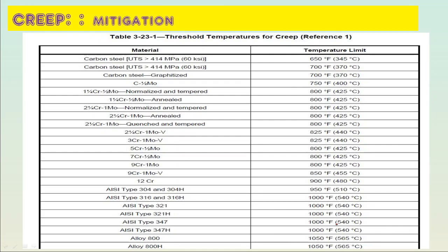The threshold temperatures for creep are as follows. For carbon steel with UTS greater than 460 MPa, the temperature limit is 345°C — operating above this increases the risk of creep. For carbon steel with UTS greater than 4 MPa, it can be used up to 370°C.